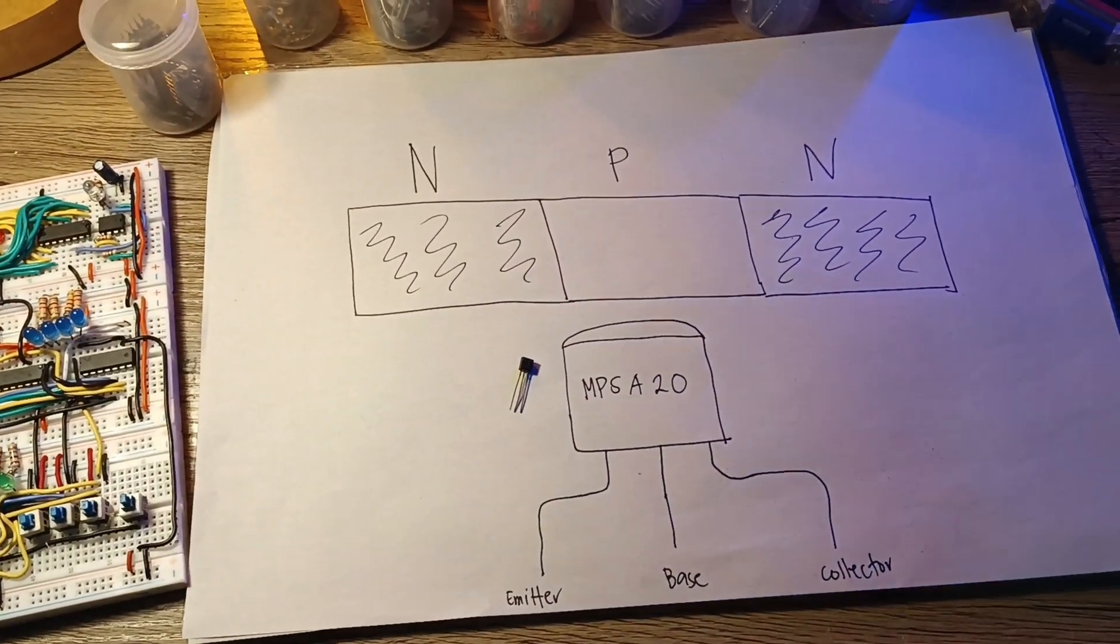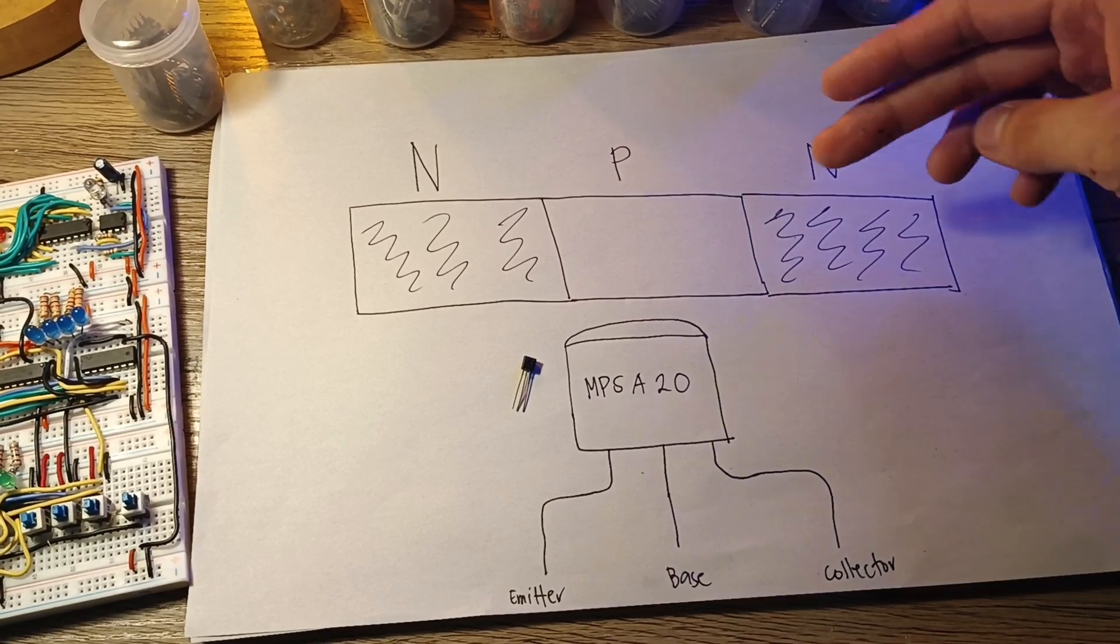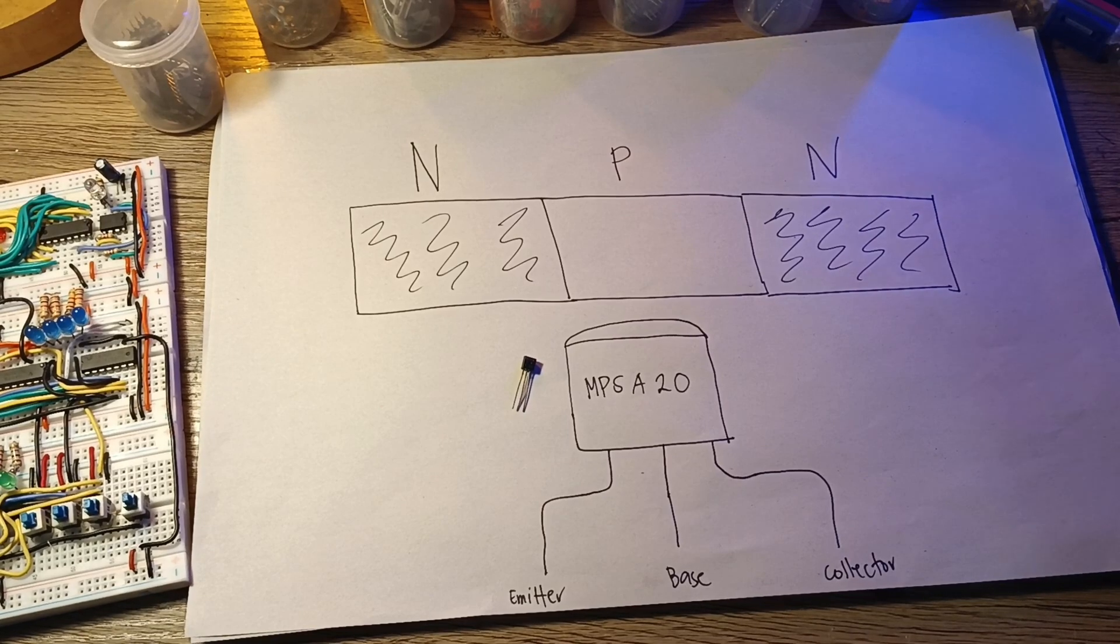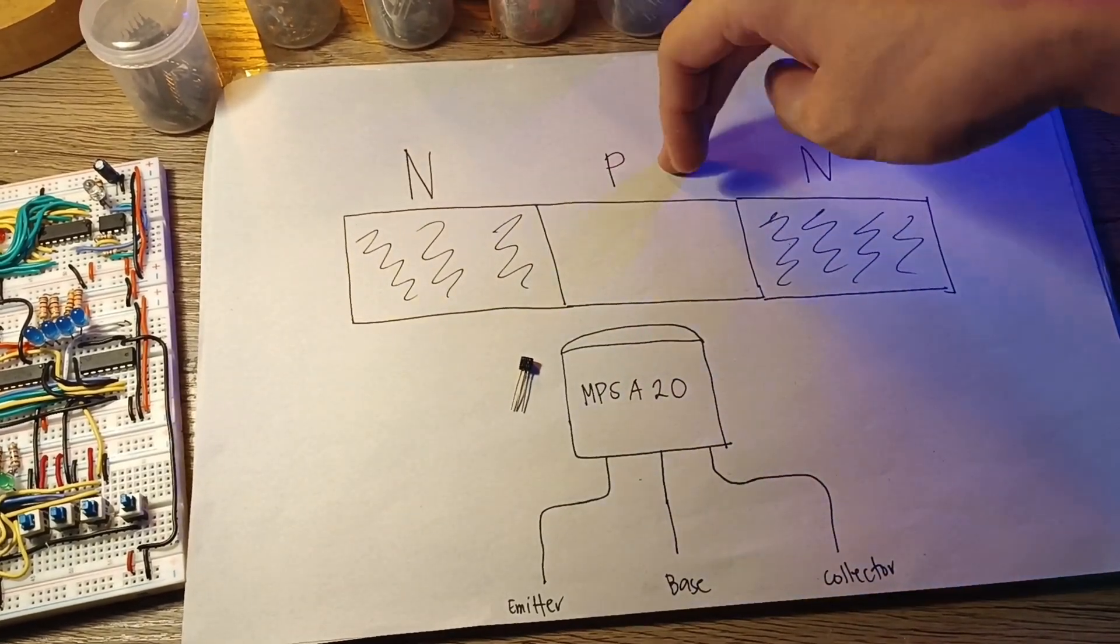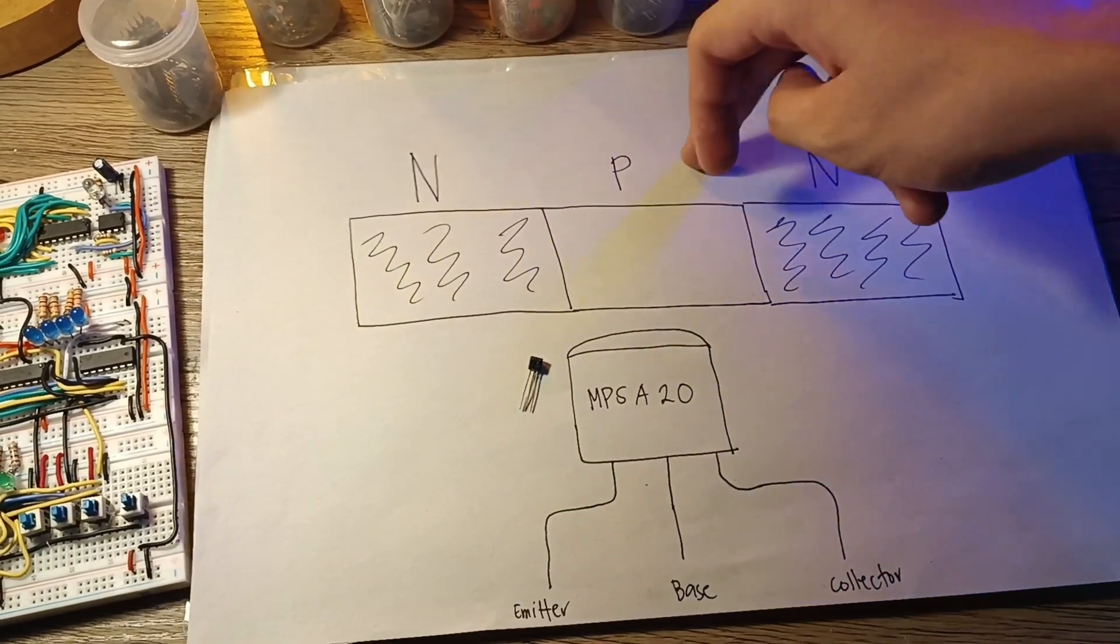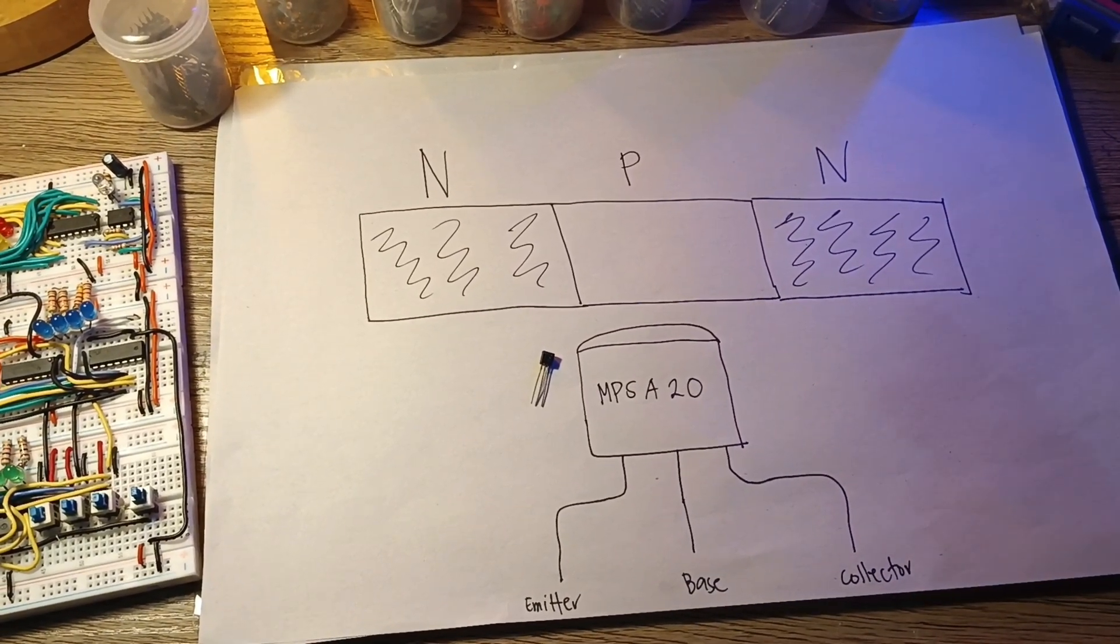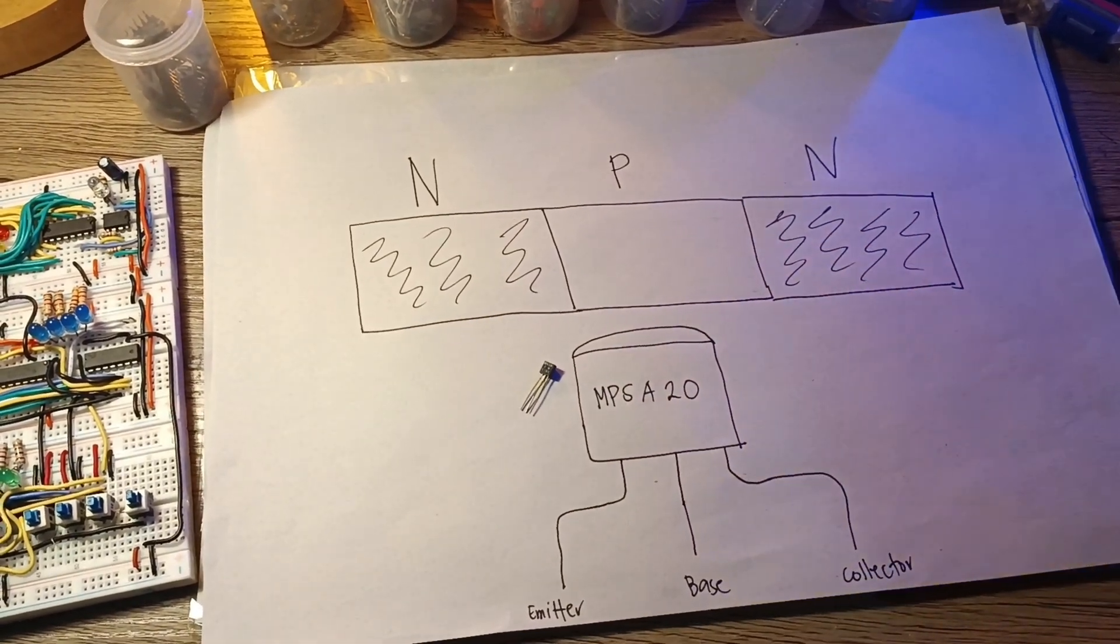The MPSA-20 is an NPN transistor. NPN has three layers of semiconductor material: an N-type layer or the negative, the P-type layer or the positive, and the N-type layer. The layers are referred to as the emitter, base, and collector respectively.